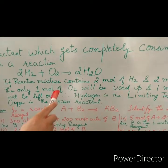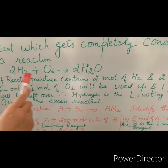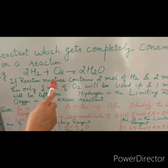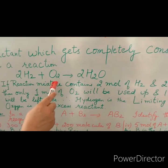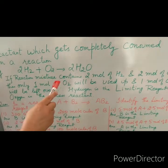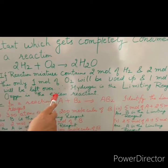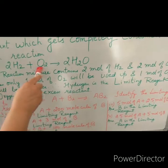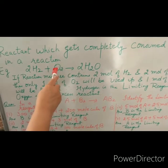Now let us take a situation where we have in a reaction mixture 2 mol of hydrogen and 2 mol of oxygen. Only 1 mol of oxygen will be used in this reaction, so 1 mol will be left over. We can say here that hydrogen is the limiting reagent and oxygen is the excess reagent.